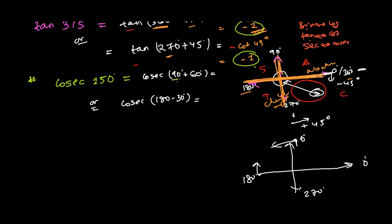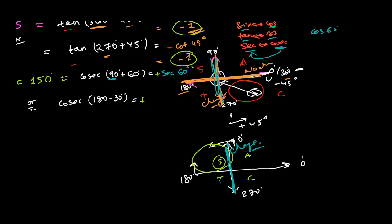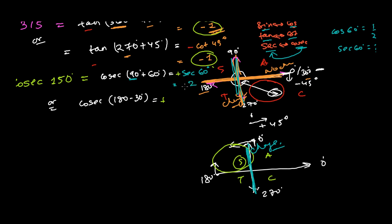We are in the second quadrant. By the CAST rule, sine is positive in the second quadrant, and cosec shares the same sign as sine, so the value is positive. Using the 90-basis, there is a change: cosec converts to sec. So cosec(90 + 60)° becomes sec 60°. Since cos 60° = 1/2, its reciprocal sec 60° = 2, so cosec 150° = 2.